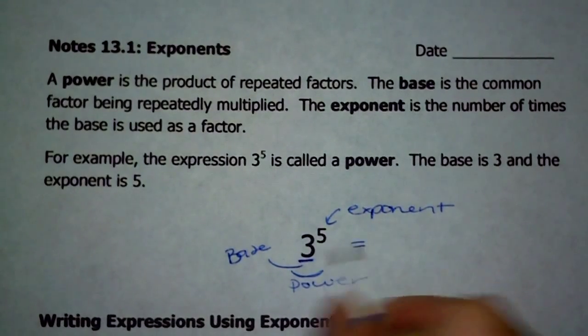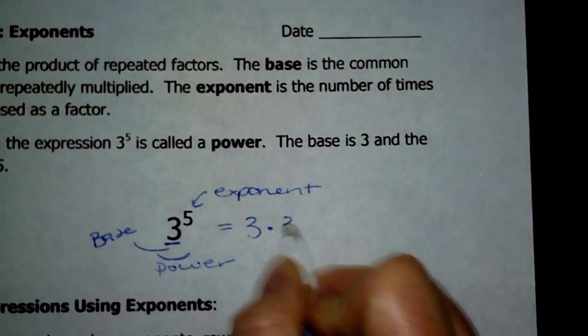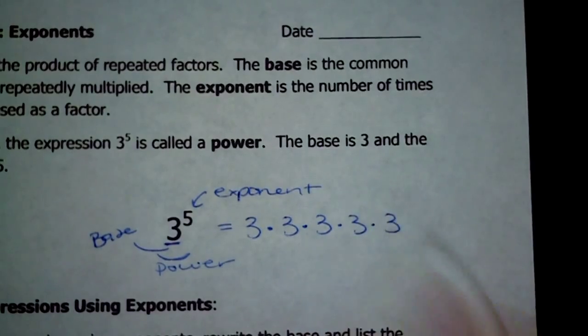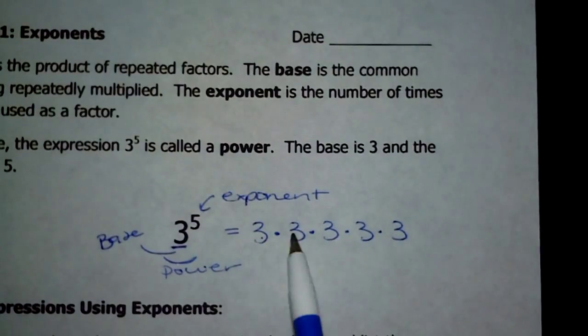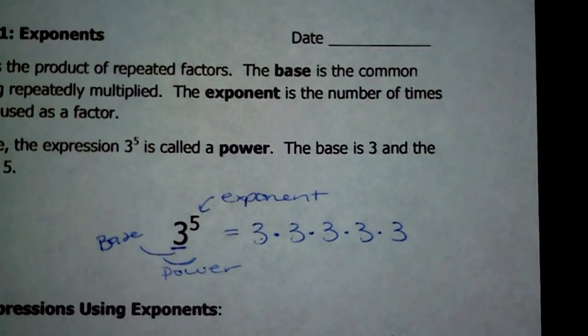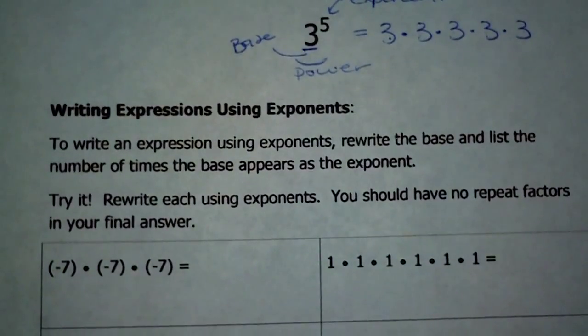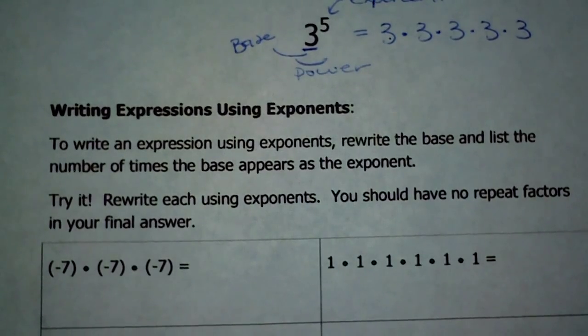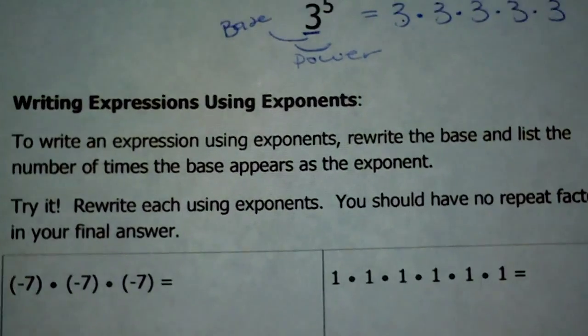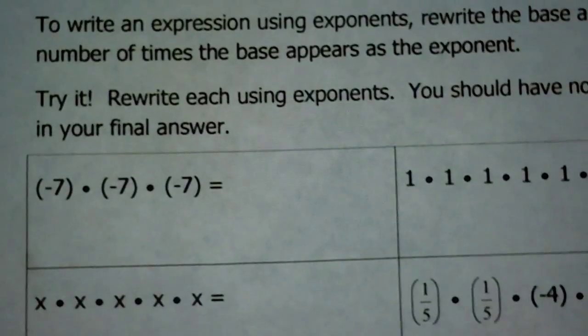So what this means — this 3 to the 5th power — it means I am taking the factor 3 five times. The exponent tells me how many 3's to multiply. To write an expression using exponents, all you need to do is rewrite the base and then tell me the number of times that base appears, and that will be your exponent.